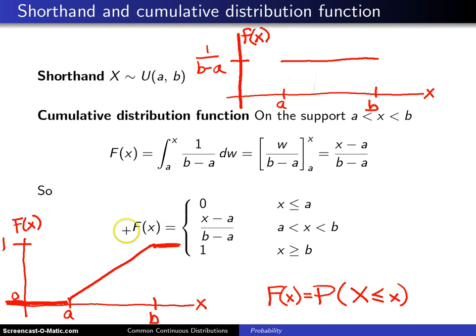Finally, to write the cumulative distribution function properly, it should be divided into three pieces. It is 0 for x less than or equal to a. It is x minus a over b minus a for x values between a and b. And finally, it is 1 for x values which are greater than or equal to b.